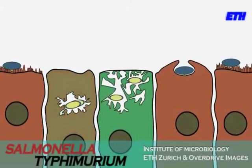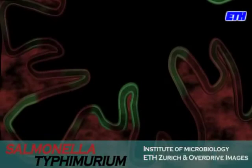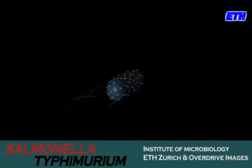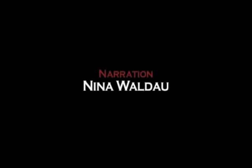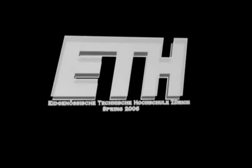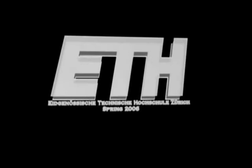Using type 3 secretion systems as molecular syringes to inject effectors into intestinal cells and manipulate signaling pathways, salmonella establishes an infection in the gut and triggers a profound inflammatory response, leading to the typical symptoms of abdominal pain and diarrhea. Much work is still needed to understand the different steps leading to disease.